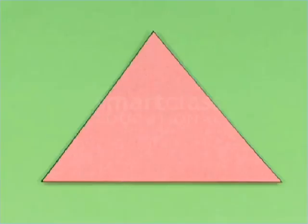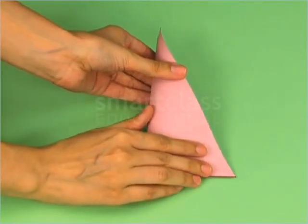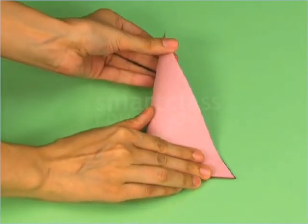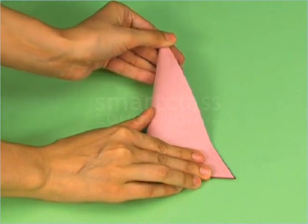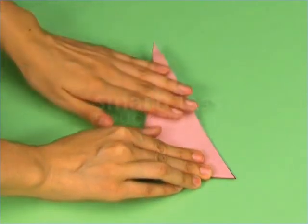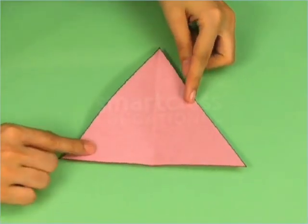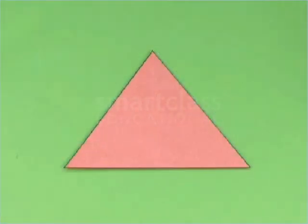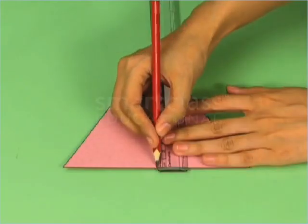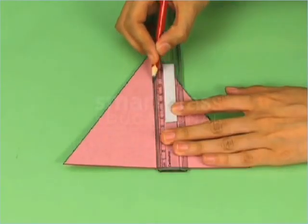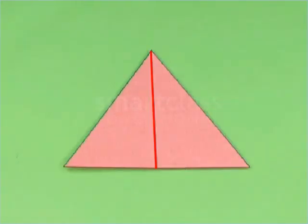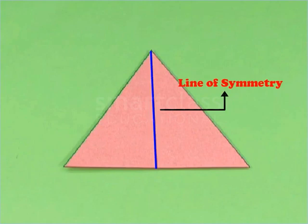Take the cutout of the equilateral triangle. Fold it through one of its vertices so that the two parts of the triangle exactly overlap each other. Unfold the triangle to get a crease. Use the pencil and the ruler to draw a line on the crease. The triangle has line symmetry along this line, so this line is called the line of symmetry of the triangle.